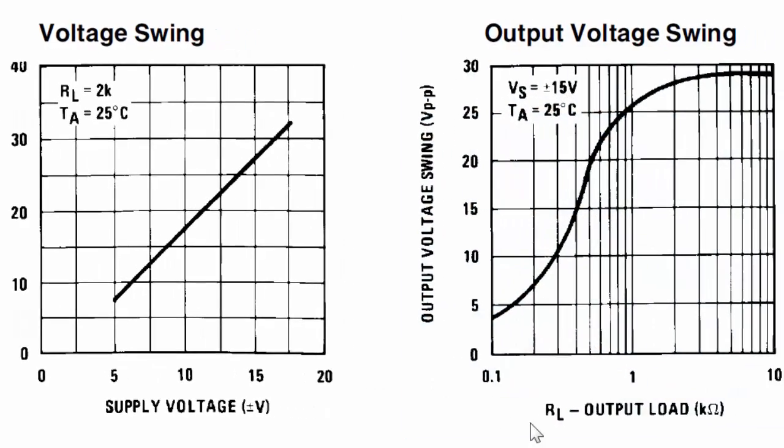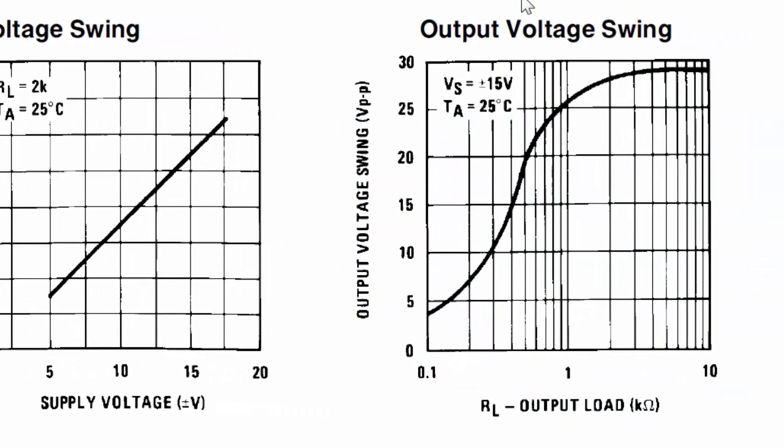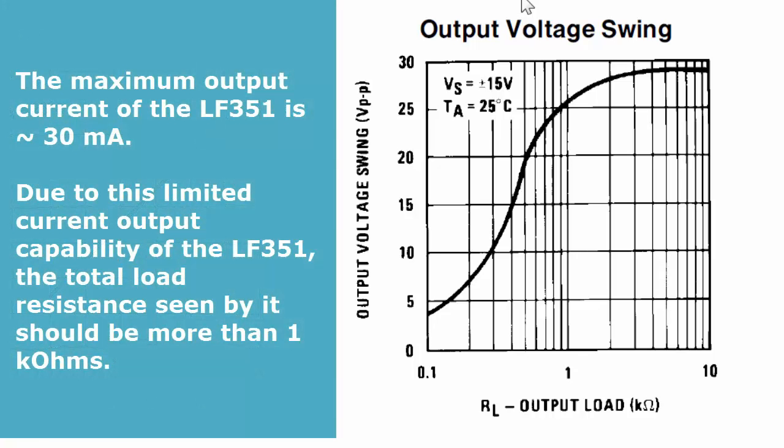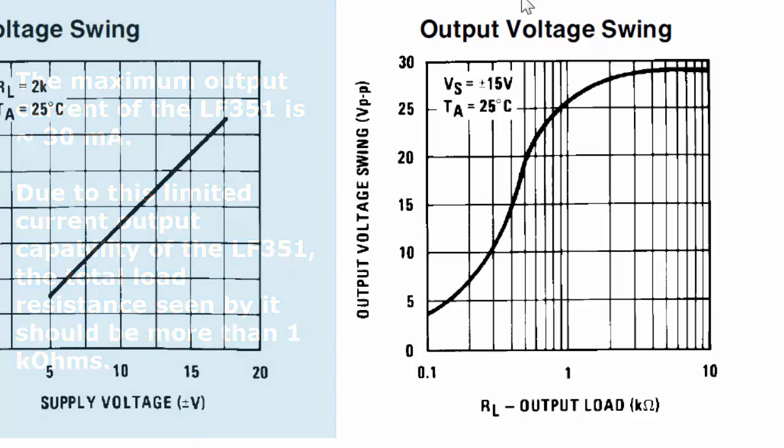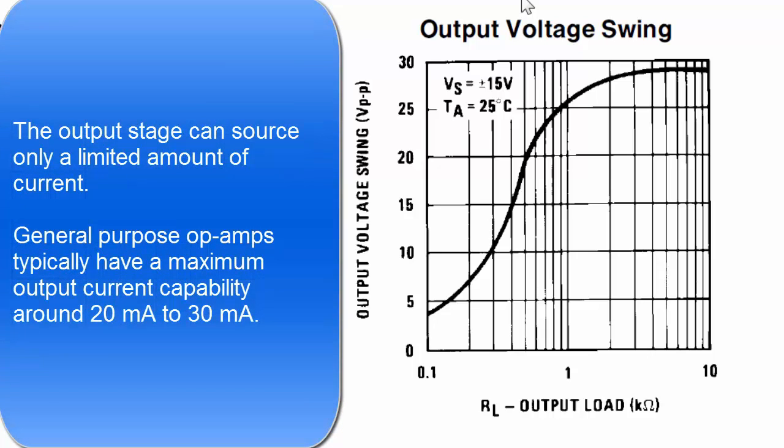On the next graph on the right, which compares output voltage swing versus the load resistance, tells a different story. Essentially, to get maximum voltage swing, the load resistance should be on the order of several kilo ohms, four kilo ohms or larger. If you try to drive a very small resistance with the LF351, you will not be able to achieve maximum output voltage swing.